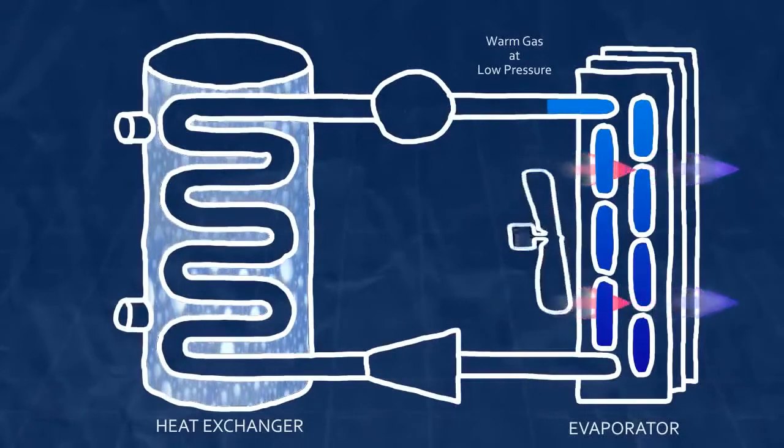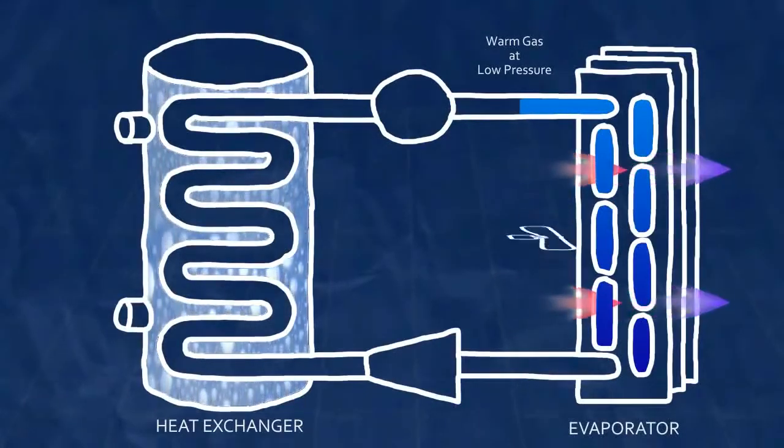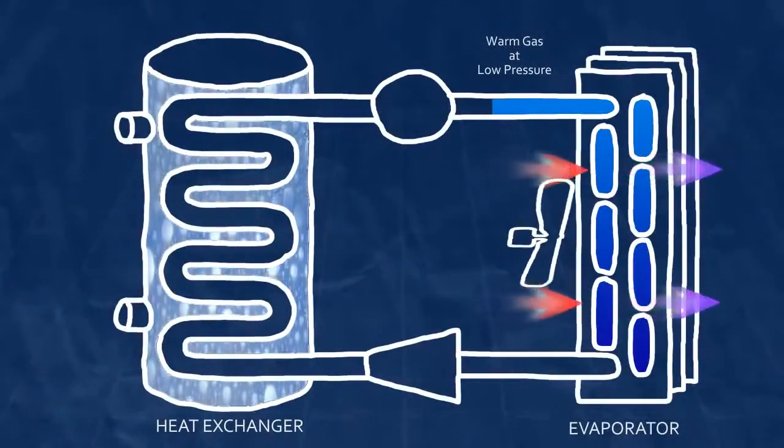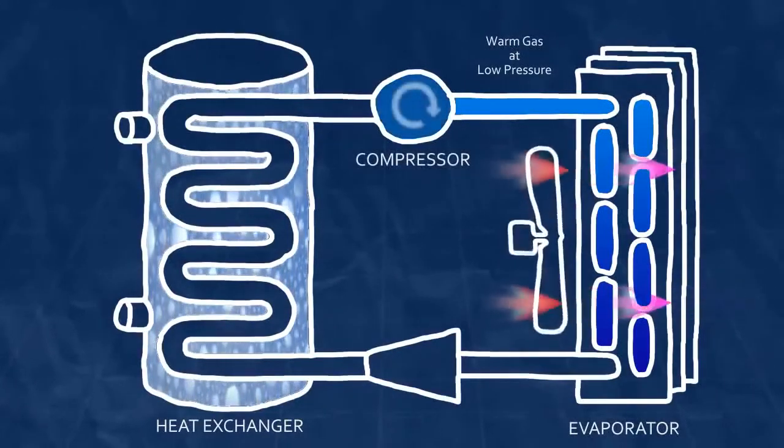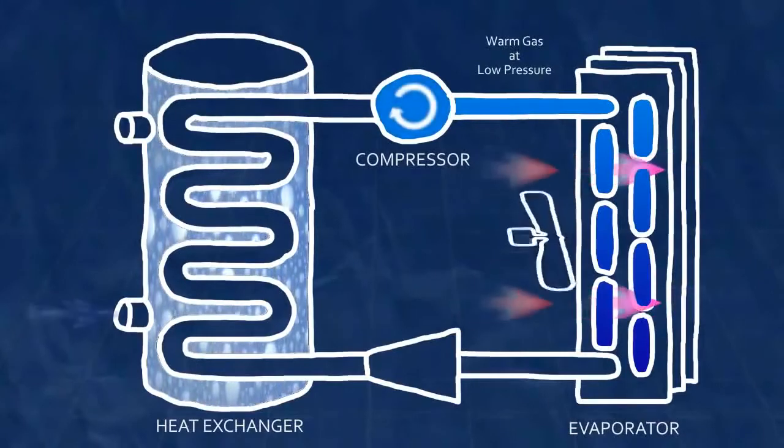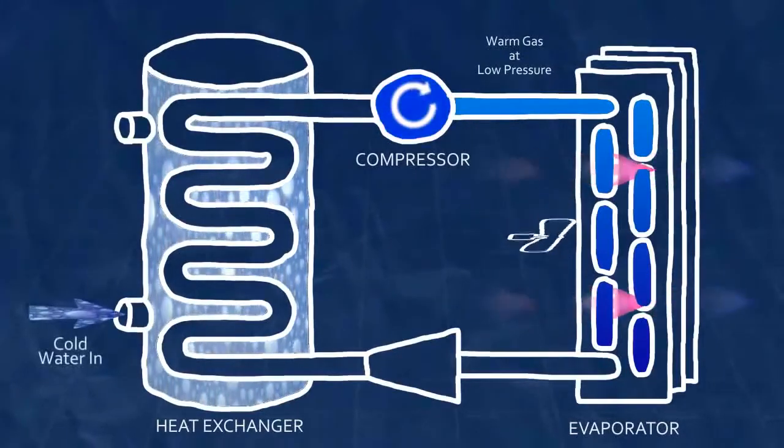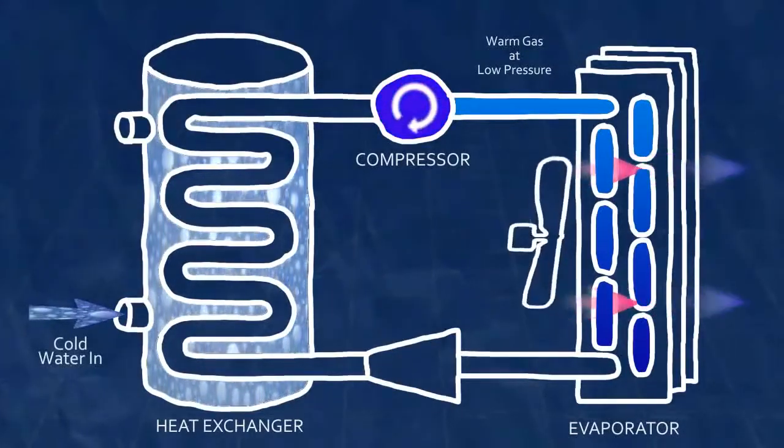The refrigerant is still not hot enough to heat water, however, so that's where the compressor comes in. The compressor raises the pressure of the gas, which also raises its temperature. Once it's hot enough, the heat will flow from the refrigerant to the water.